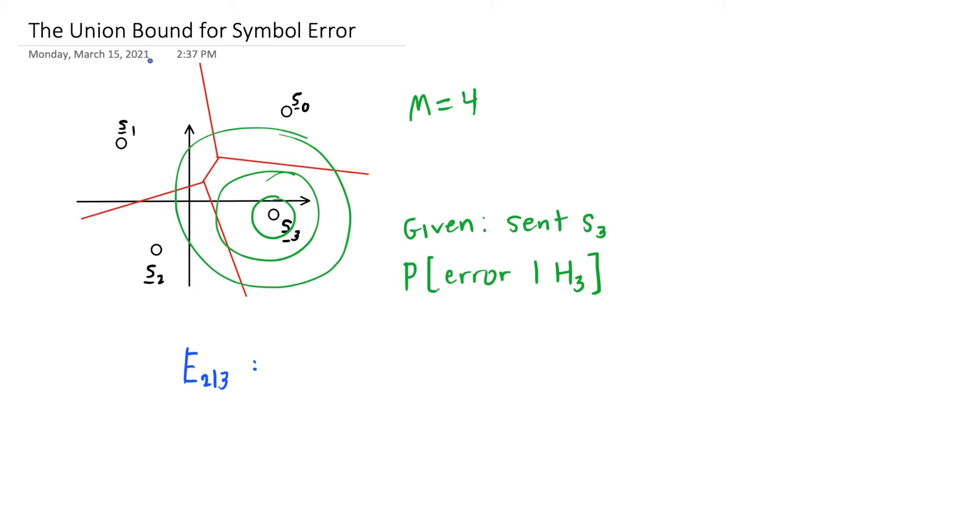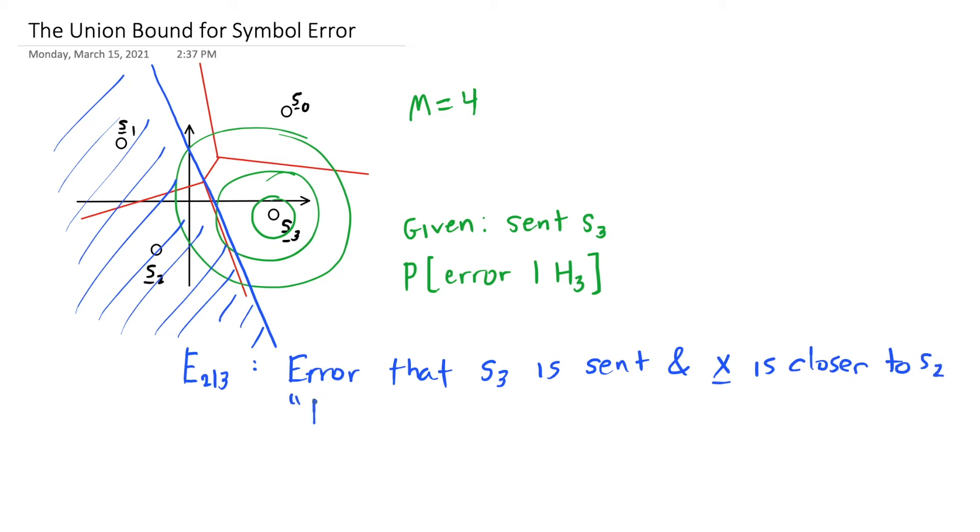This is the event I'm going to draw here. Remember the perpendicular bisector between s2 and s3 divides the space into 2. Given that s3 is sent, the error event e2 given 3 is this event on this side of the half space. The error e2 given 3 is the error that s3 is sent, but the received vector x is closer to s2. We're going to abbreviate this as deciding s2 given that h3 is sent.